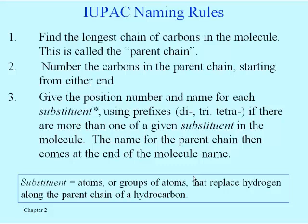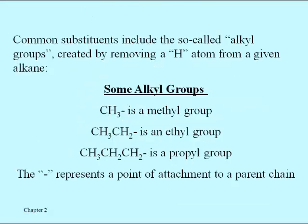For right now, since we're just dealing with hydrocarbons, the substituents also just contain those elements, and we need to use these rules to distinguish those kinds of carbons from the ones that are part of the parent chain. That's really the key to this naming system. This next slide shows some common substituents for alkane molecules. They are termed alkyl groups because their names end in -YL, and because they just have carbon and hydrogen, they can show up a lot in the types of compounds we see in this chapter.